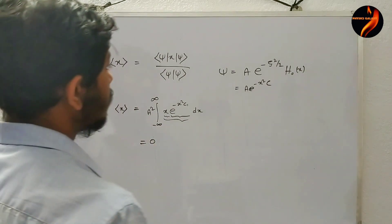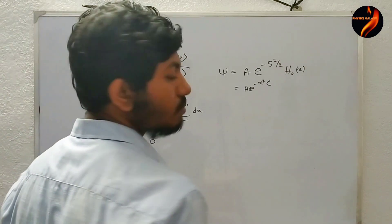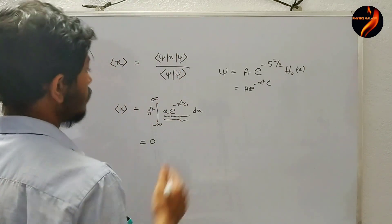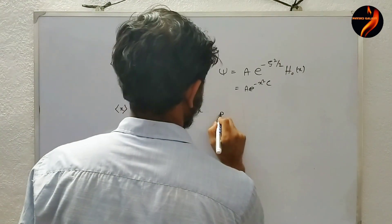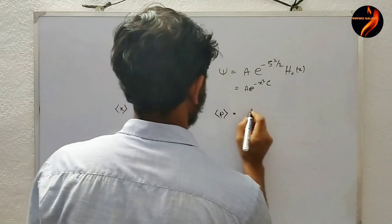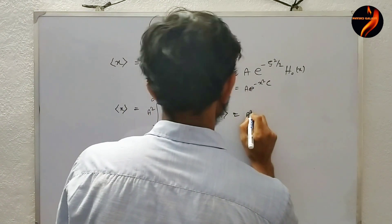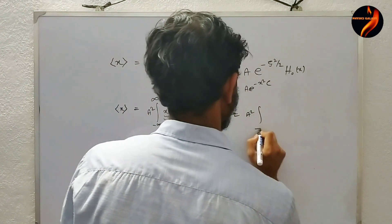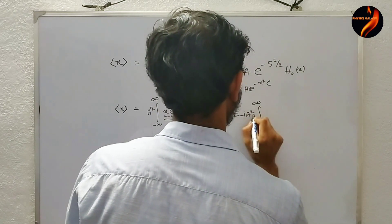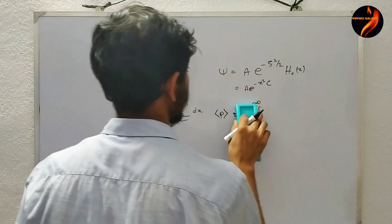They then asked me to find the expectation value of momentum in the ground state. The momentum expectation value is similar — it involves the operator minus i-h-bar d/dx acting on the wave function. The integrand again turns out to be an odd function.